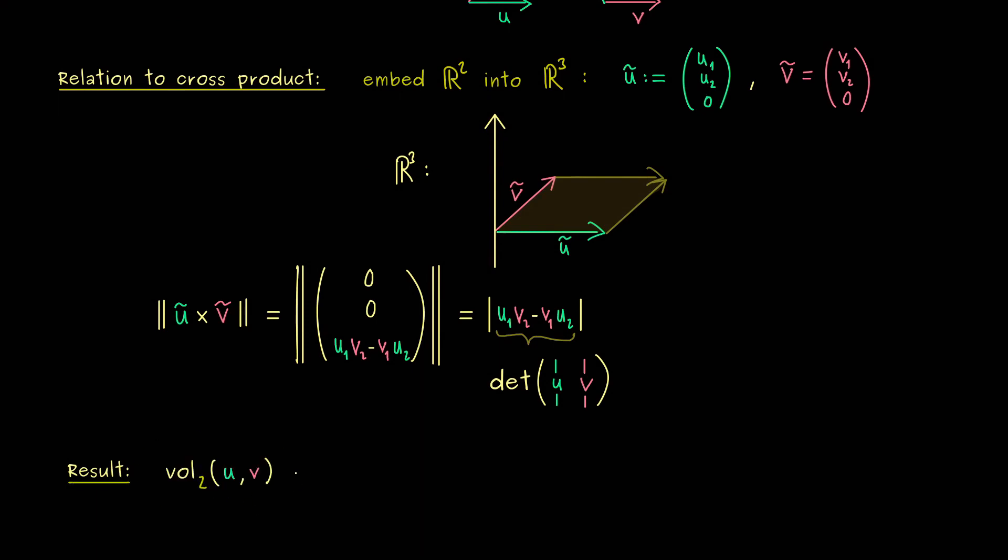The two-dimensional volume function is described by the determinant function. We just have to write the vectors in the columns of a matrix. So in other words, now you can remember the determinant is exactly the volume function. And indeed, we could prove that by using what we already know from the cross product in R3.